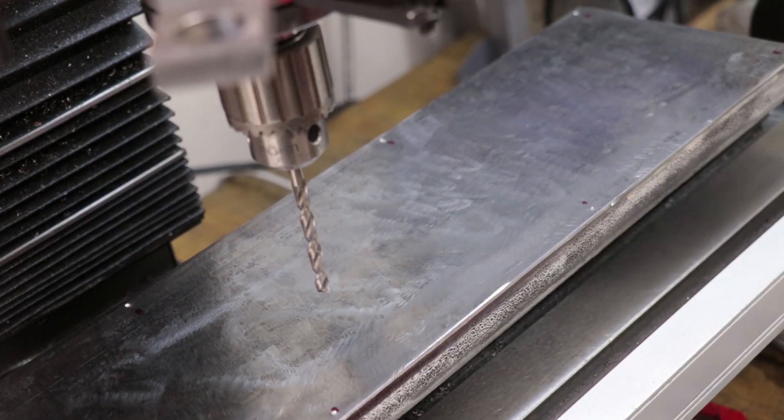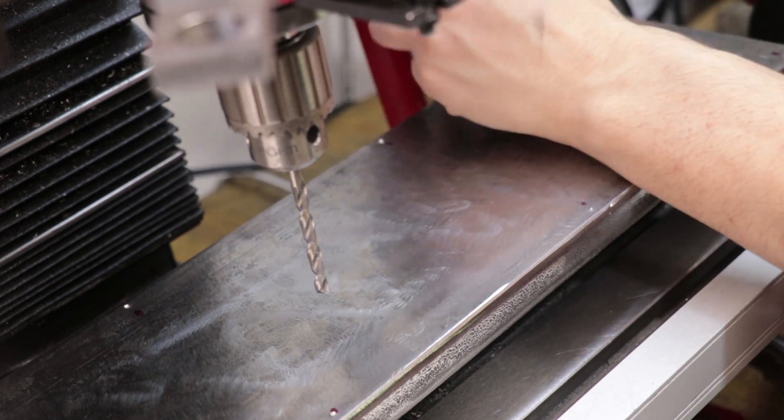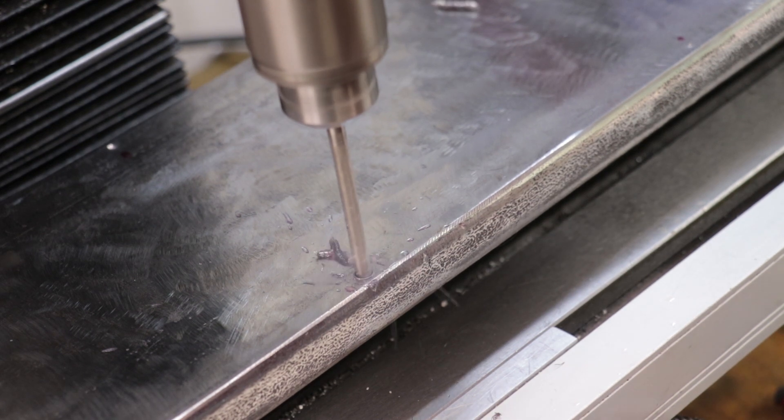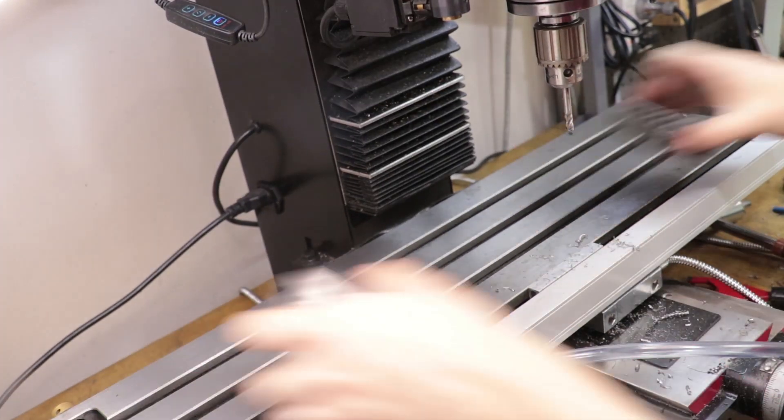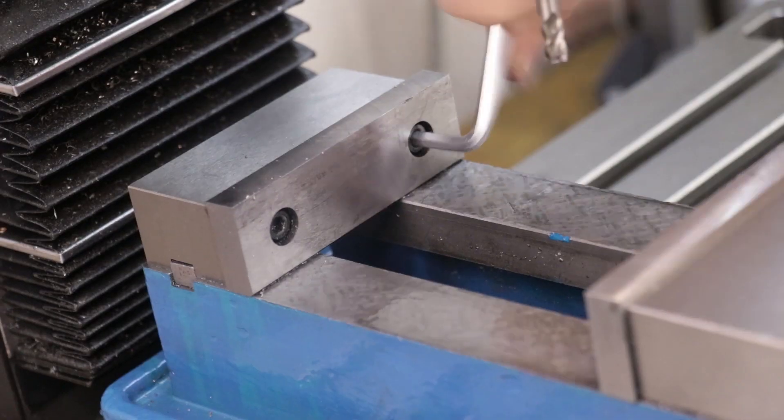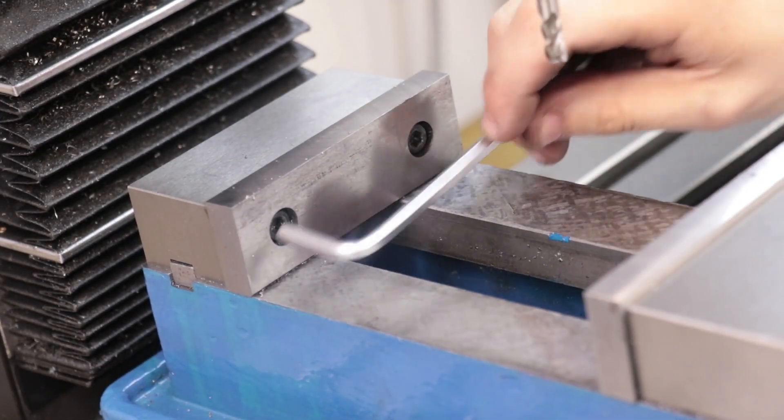Now initially, I was going to rest the steel on some 123 blocks, clamp it down to the table and drill it that way. But I didn't have enough table clamps, and it just didn't feel all that rigid. So I put the vise back on the table, and I removed the fixed jaw so the piece of steel would fit in the vise.